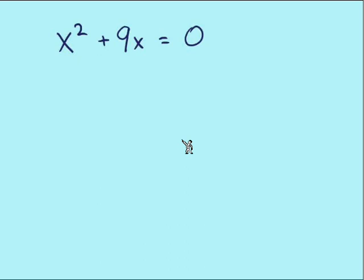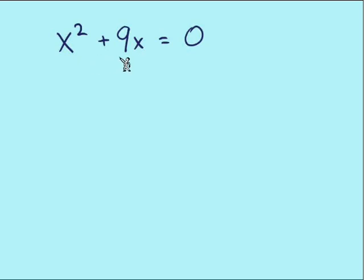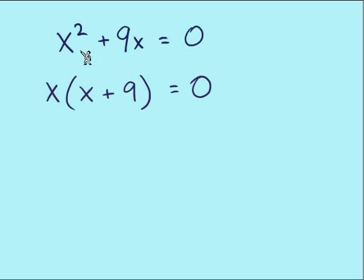Moving on to additional examples: x squared plus 9x equals 0. Is it in good setup? It is — we have our terms together on one side in descending order. We have only two terms, so it's not exactly like the examples we've seen so far, but it meets the criteria. Our terms are all together on one side in descending order, and the equation equals 0. Now we are ready to factor. Before you have thoughts about binomial patterns and squares, remember the first thing to always think about when it comes to factoring is the GCF. Each of these terms has an x, so there is a GCF.